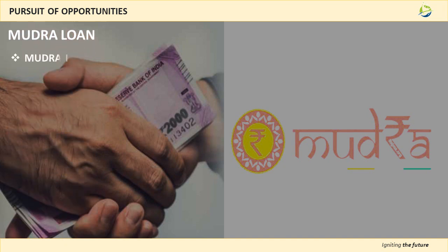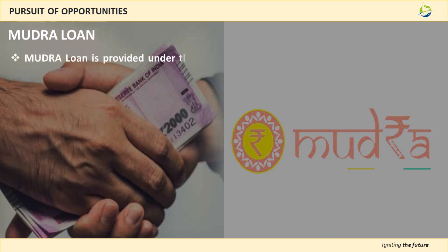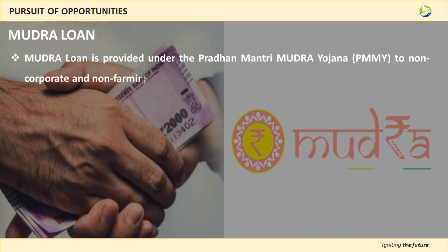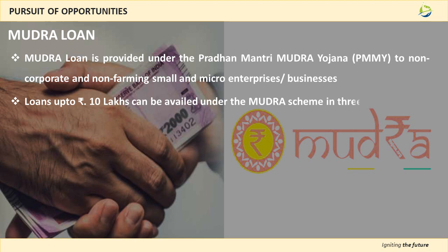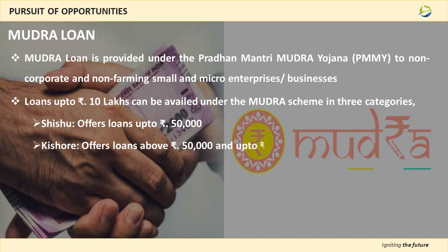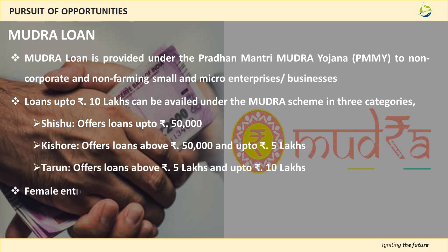Mudra Loan. This loan is provided to non-corporate, non-farming, small and medium enterprises under Pradhan Mantri Mudra Yojana. This loan is provided under 3 categories, namely Shishu, Kishor, and Tarun. Shishu offers loans up to Rs 50,000. Kishor offers loans from Rs 50,000 to Rs 5 lakhs. Tarun offers loans from Rs 5 lakhs to Rs 10 lakhs. The applying procedure is similar to the MSME Business Loan.